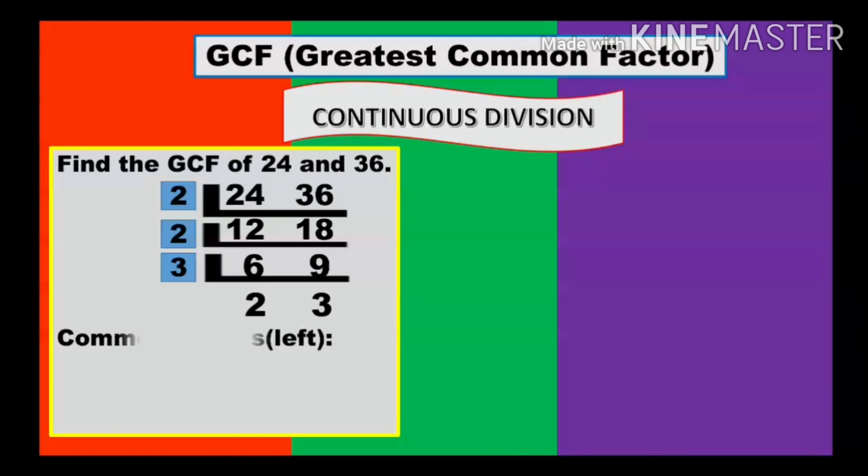Next, you have to identify what are those common factors that you divided. Those are 2, 2, 3. Jot down: 2, 2, 3. Then, multiply those common factors. 2 times 2 is 4, times 3 is 12. So our GCF for 24 and 36 is 12.